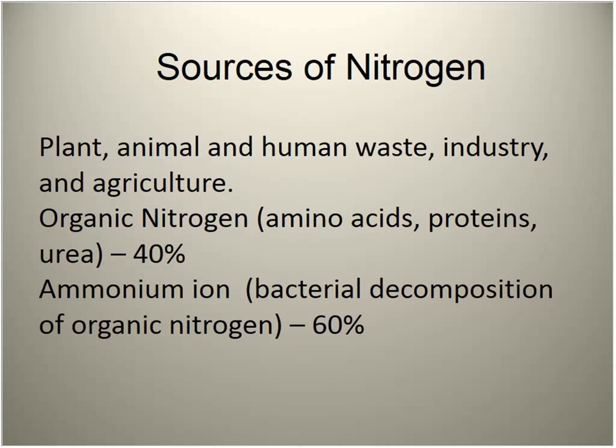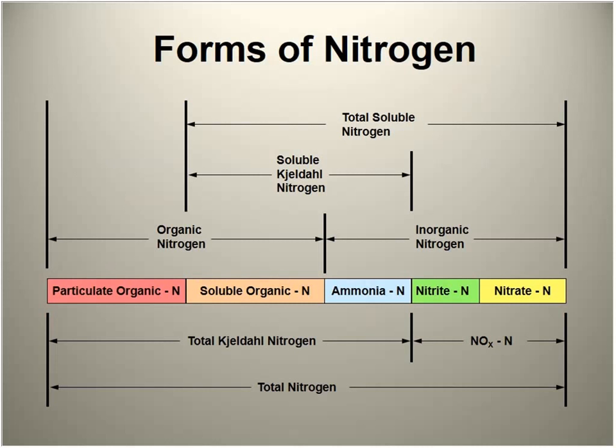Nitrogen is a nutrient for vegetation, growing algae. The plants die, drop to the bottom, break down, and ponds that were once nice gradually become bogs. Nitrogen comes from animal and human waste, protein, urea, ammonium, and bacterial decomposition. The different types include organic nitrogen — both particulate and soluble — and ammonia nitrogen. When you add those three together it's total Kjeldahl nitrogen. Then we have nitrite and nitrate.